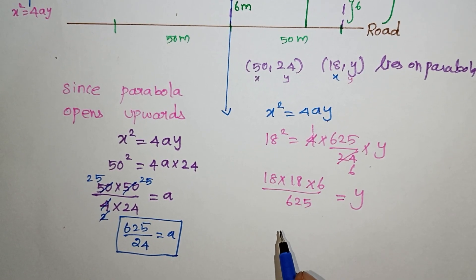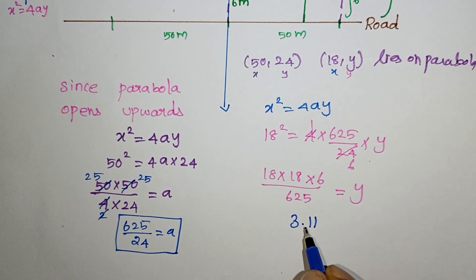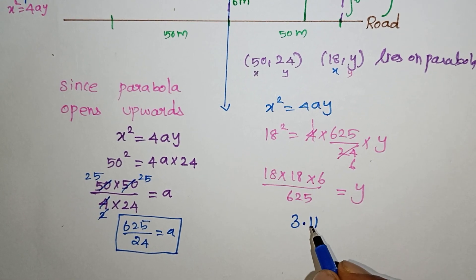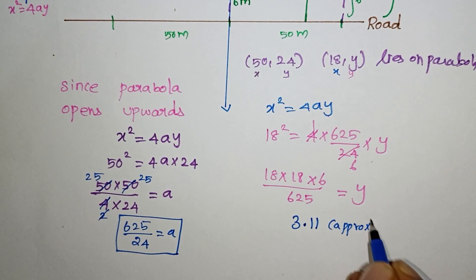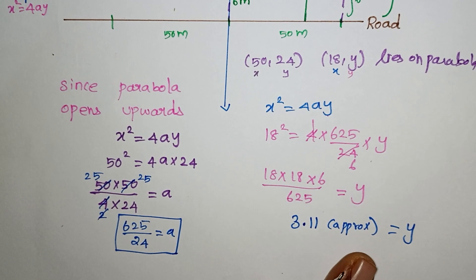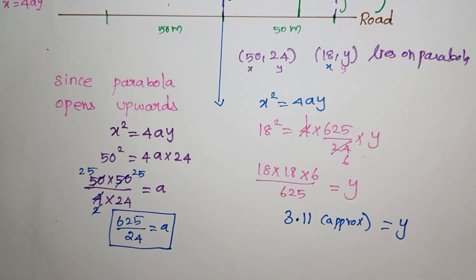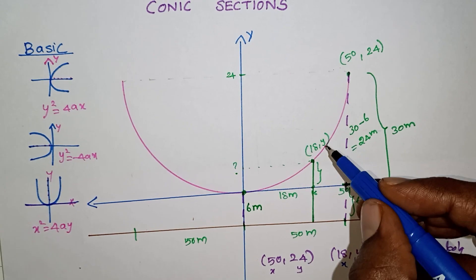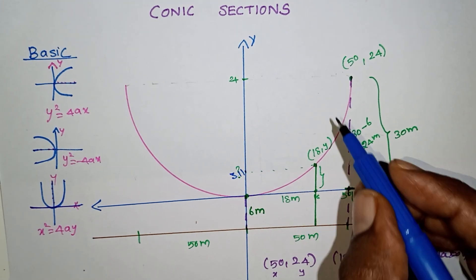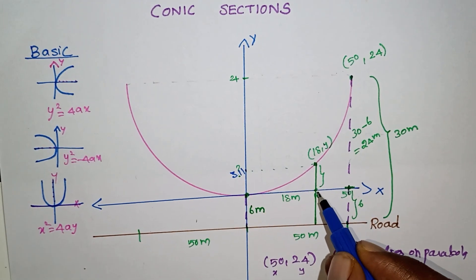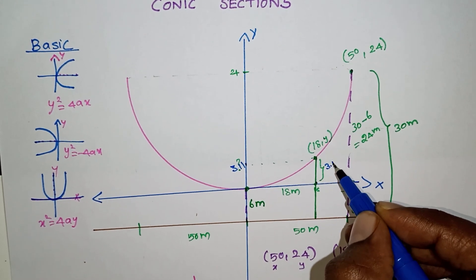Dividing, the answer is 3.11. This is the decimal point value, approximately. So y = 3.11. Now going to the diagram, this point is 3.11 on the x-axis, and the length is 3.11.